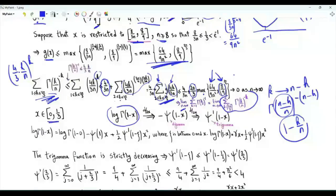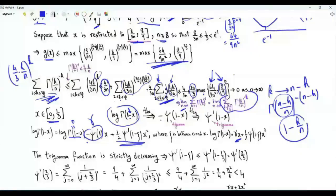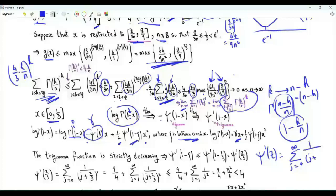We obtain bounds via the second-degree Taylor polynomial of log Γ(1−x). Differentiating once with respect to x gives −ψ(1−x), where ψ is the digamma function (logarithmic derivative of Γ). Differentiating again gives +ψ₁(1−x), the trigamma function. The Taylor expansion gives: log Γ(1−x) = 0 + γx + (1/2)x²·ψ₁(1−ζ), where ζ is between 0 and x, and γ is the Euler–Mascheroni constant.